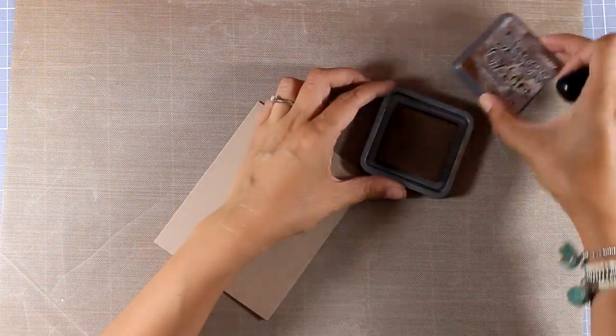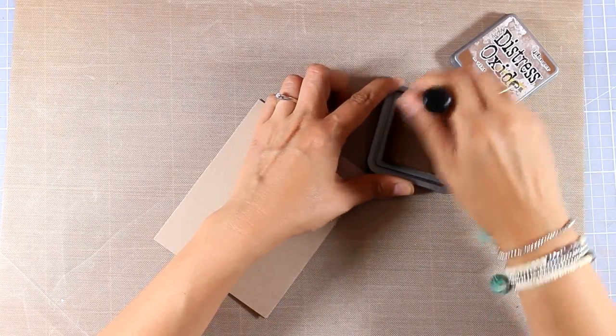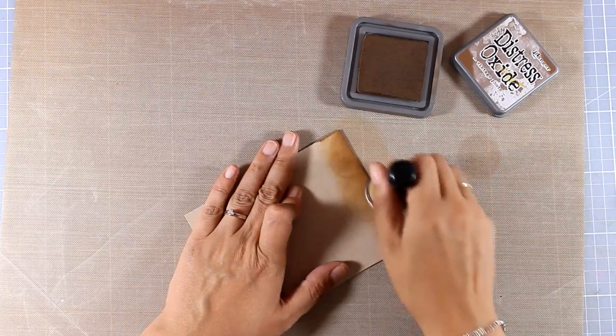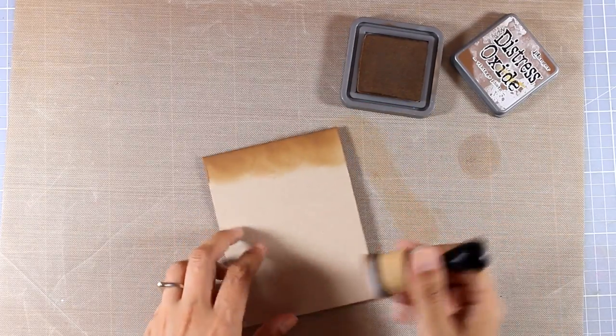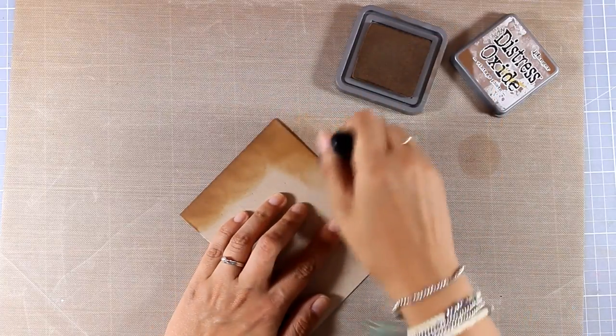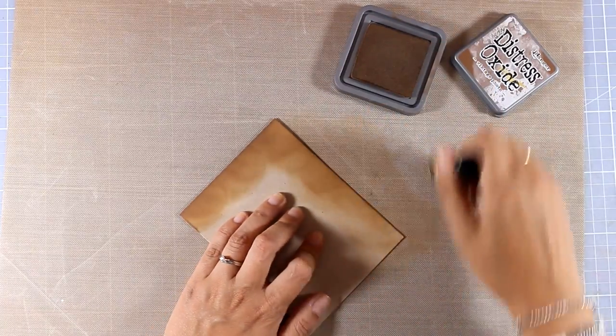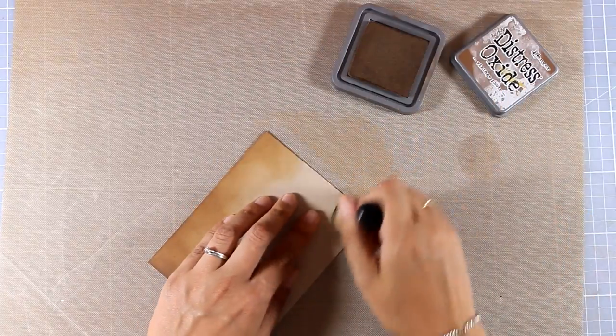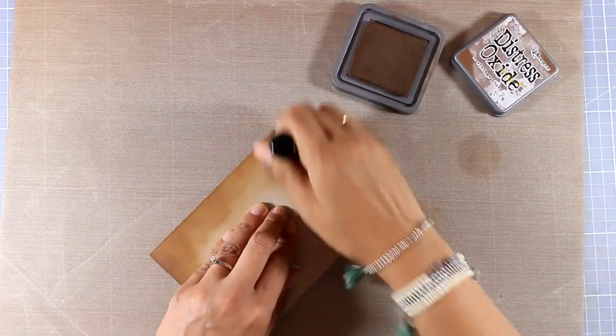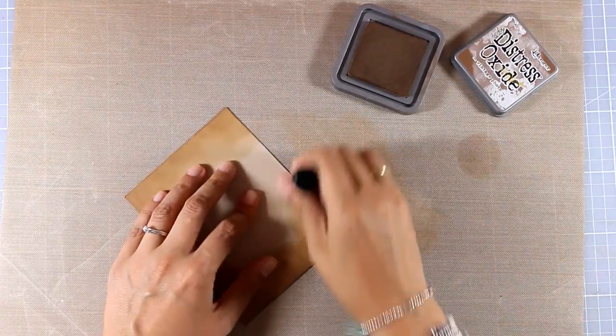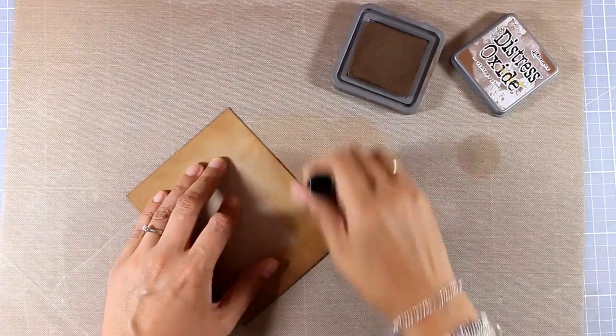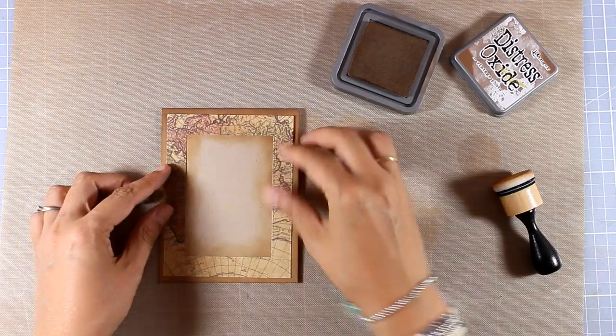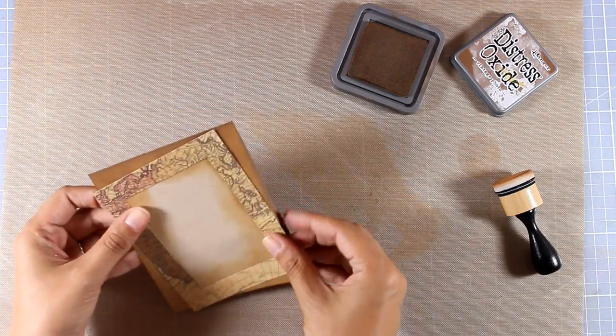Now I'm working directly on my card base. This is cardstock by Nina, it's Desert Storm. I have cut out and scored my card base so that's a standard card, four and a quarter by five and a half. I'm going with my blending tool all over the edges applying some distress oxide ink, and that's Vintage Photo. Since I'm going for a vintage look, Vintage Photo is the perfect touch. You can see how beautiful it looks once I place the frame on top.